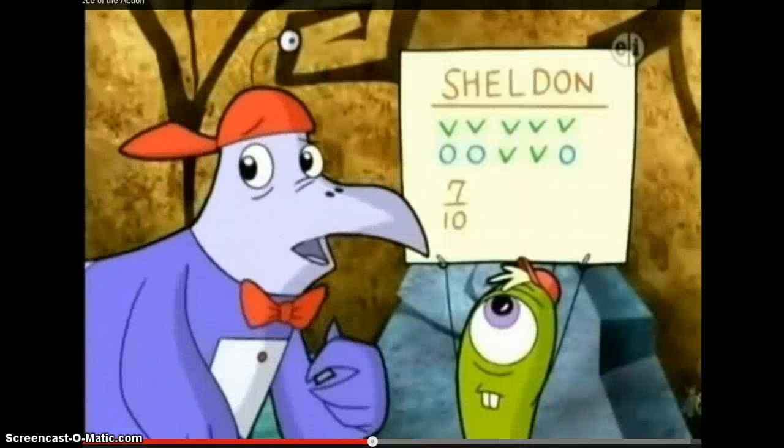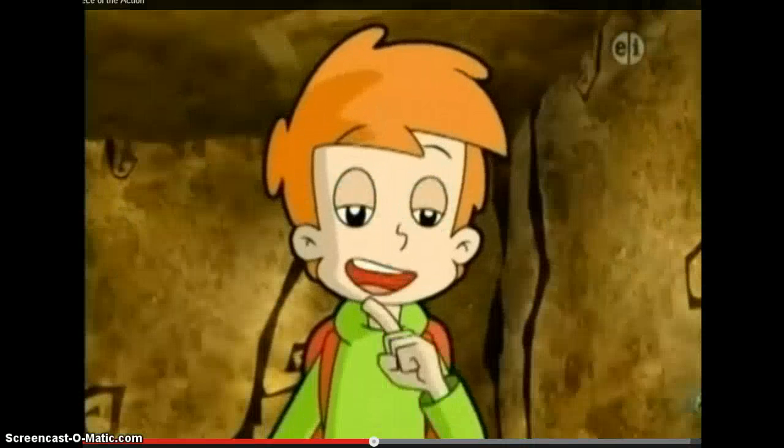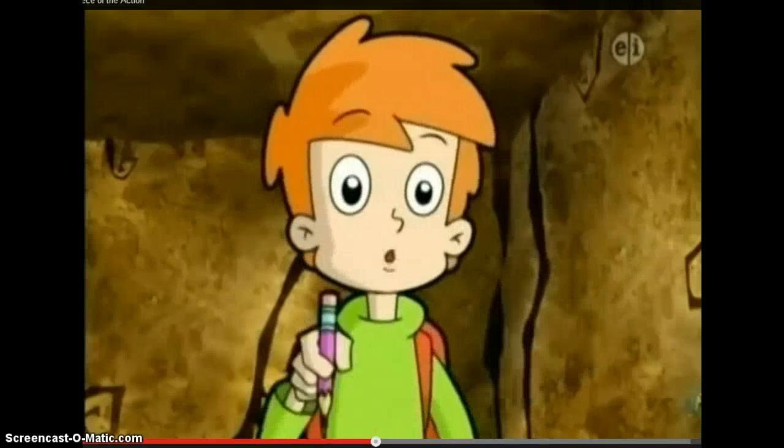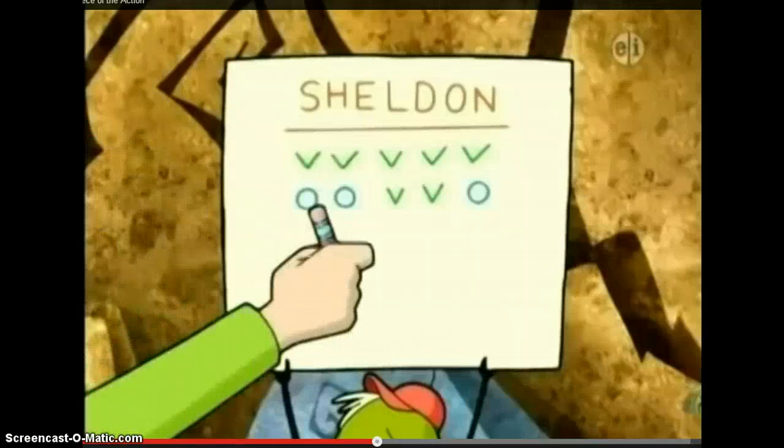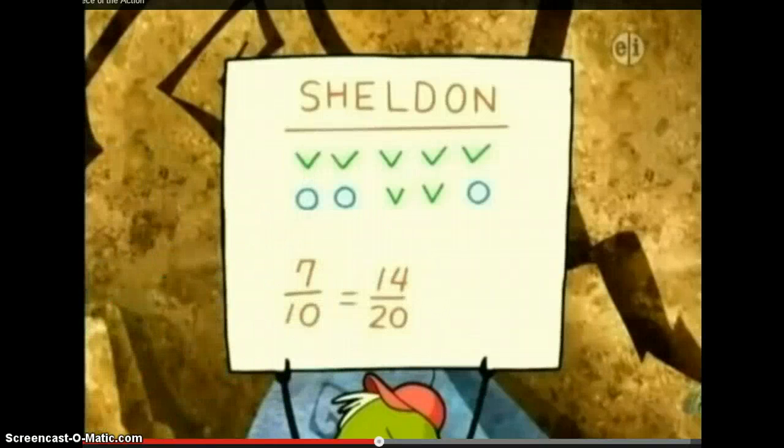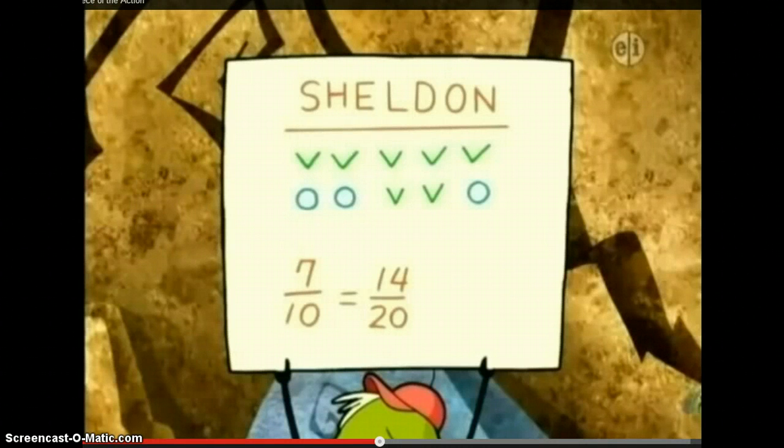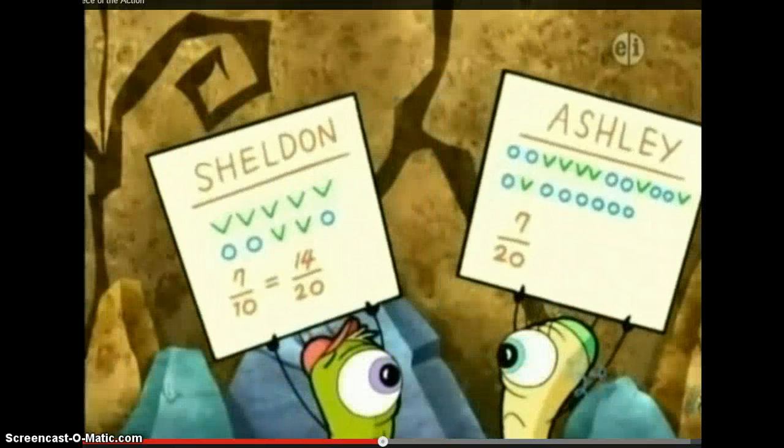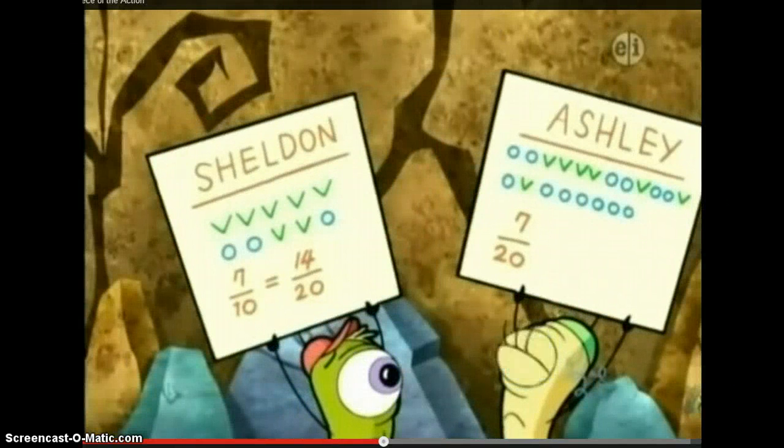Too bad Sheldon didn't make more jumps. That's it, Ditch. What if Sheldon did make more jumps? Like twice as many. Then he would have twice as many hits. Fourteen out of twenty tries? You've got it, Ditch. Seven over ten is the same as fourteen over twenty.